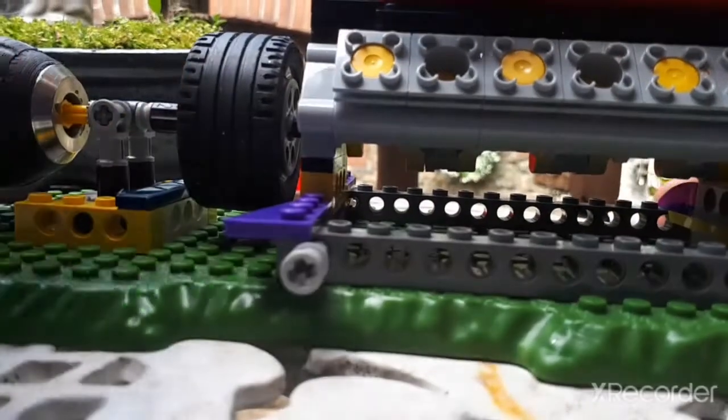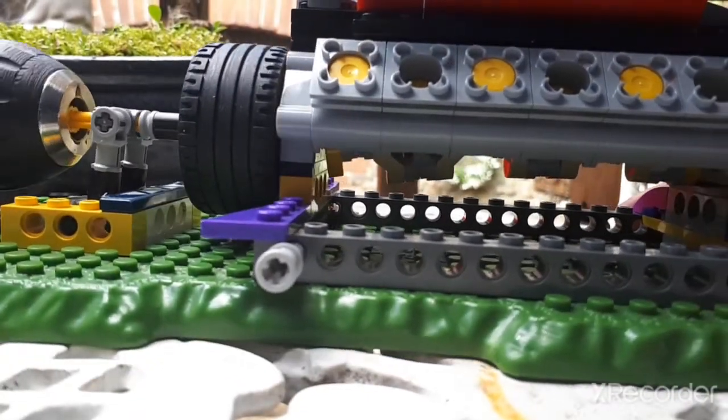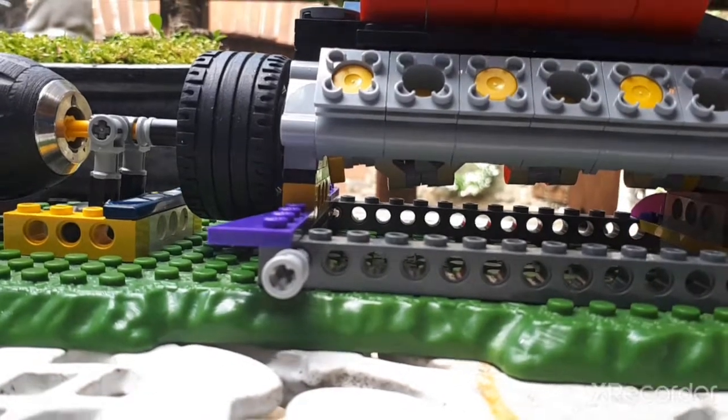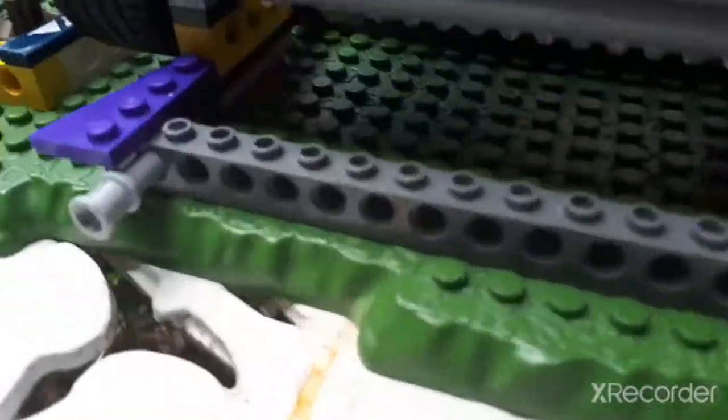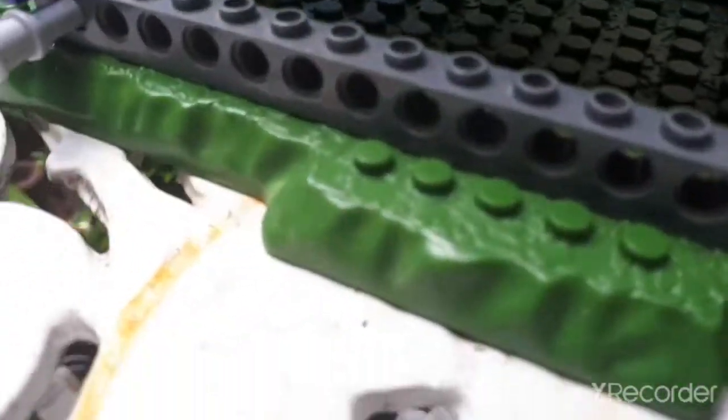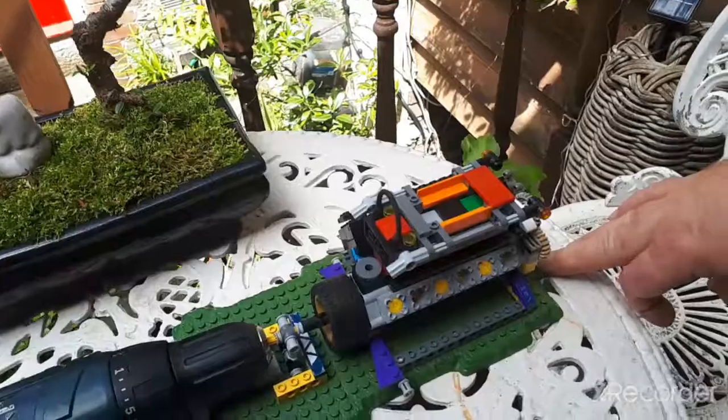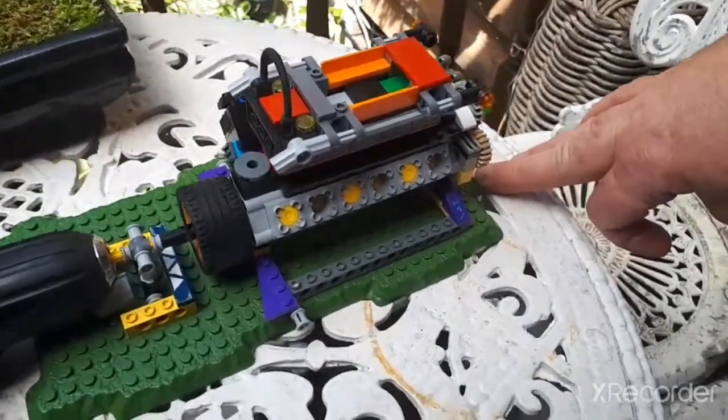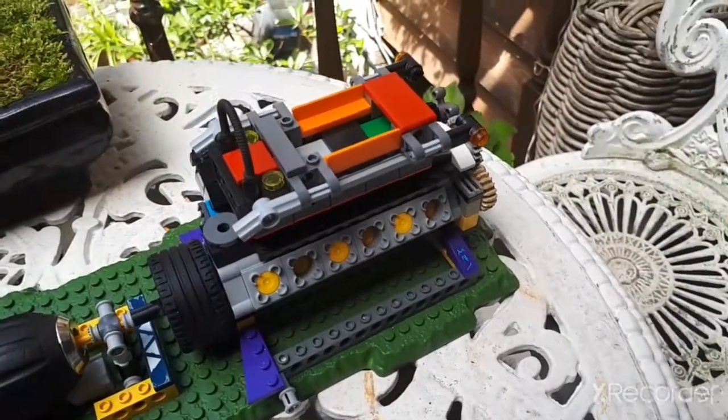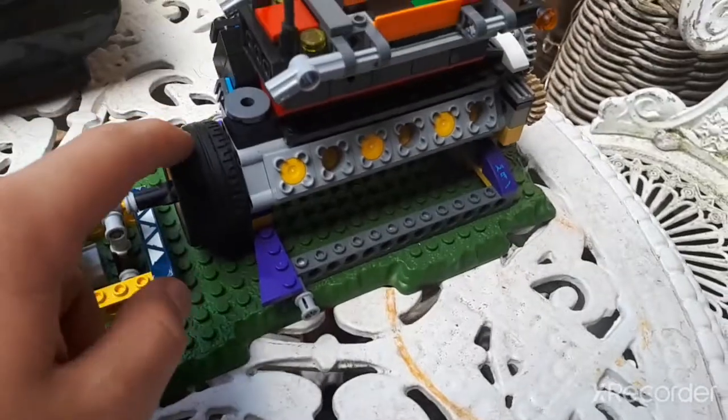What just happened here is that it vibrated and then when it vibrated the wheel came out. There we go, fixed it again. What's happened is that when I start it up, the vibrations make it move forward slightly and then the crankshaft comes out.